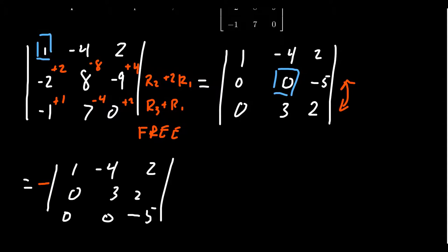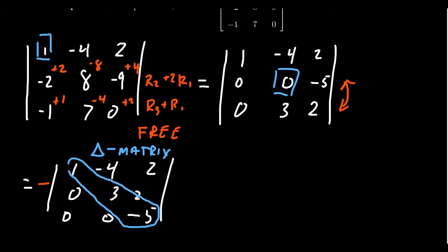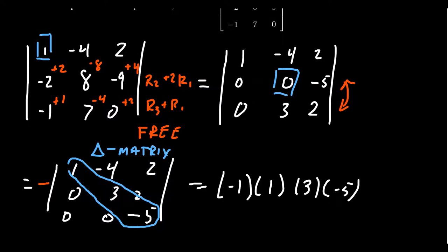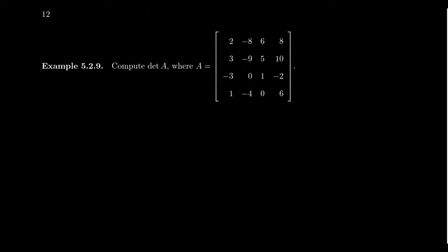The matrix is now in echelon form — it's a triangular matrix. To find the determinant, we multiply the diagonal entries together. We get negative one from the interchange, times 1, times 3, times negative 5 — the diagonal entries. Multiplying those together, we get positive 15, which is the determinant of this matrix.